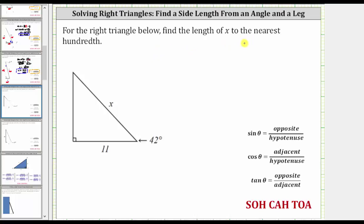For the right triangle below, find the length of x to the nearest hundredth. Looking at the given right triangle, notice how we are given this acute angle here that measures 42 degrees.